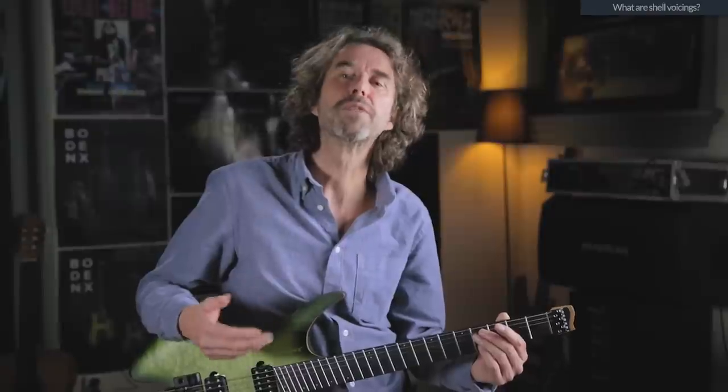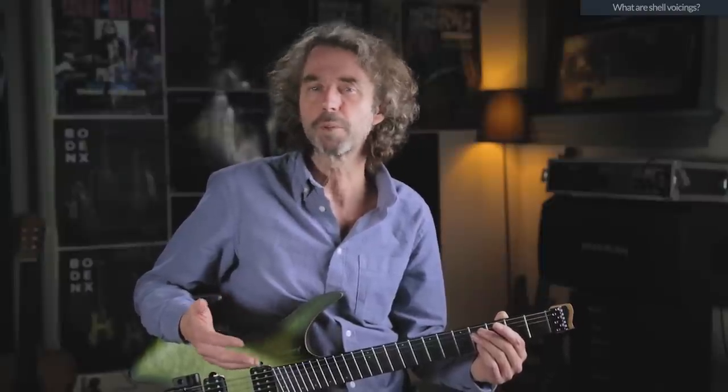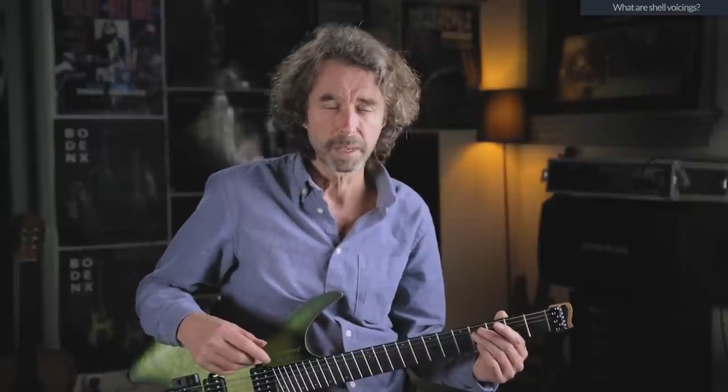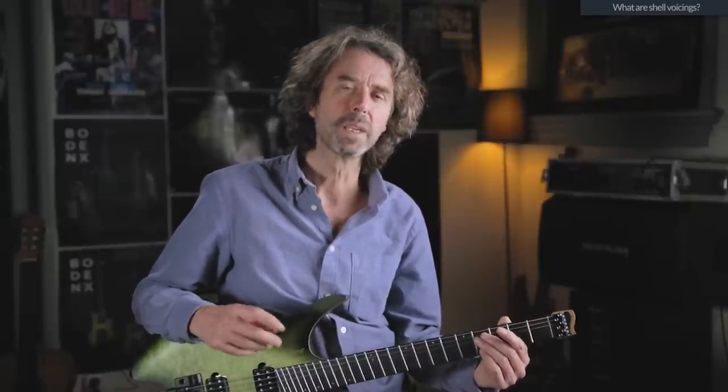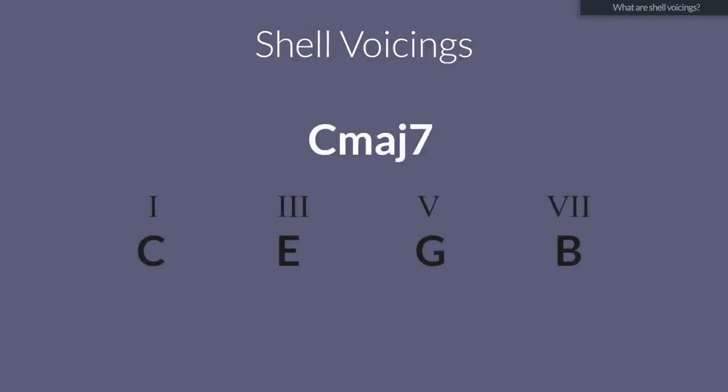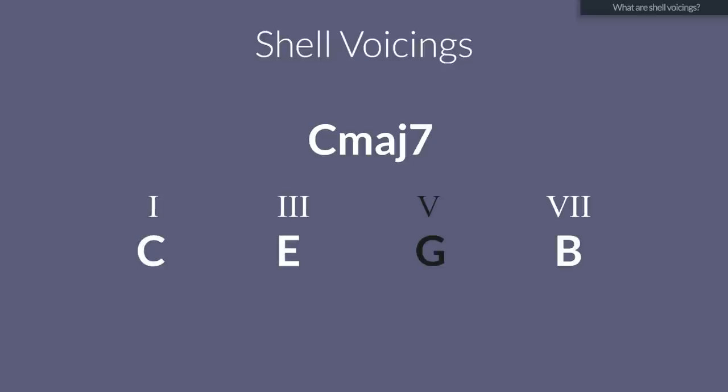Now, with these shell voicings — these simple reduced versions of complex chords — you can play any jazz standard or any complex chord progression in a very straightforward yet very efficient way. How do we do that? We will play only the most important notes of the chords, and those are the tonic, the third, and the seventh degree. We leave out any extension, the fifth, and the altered fifth.